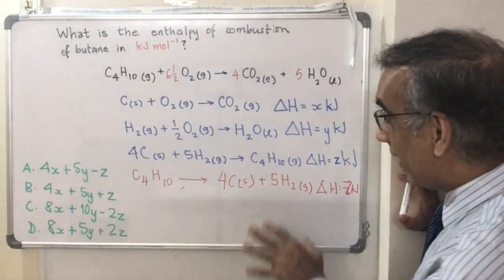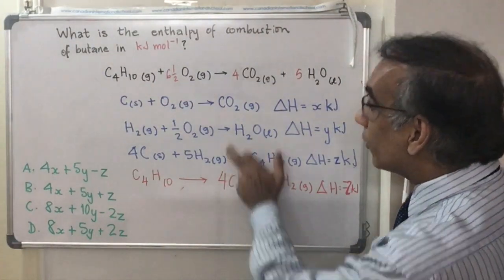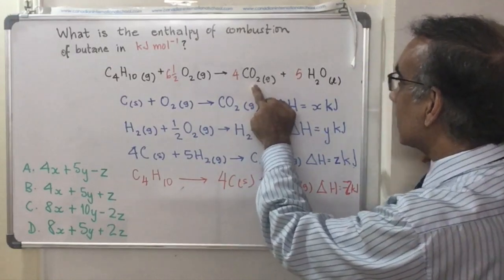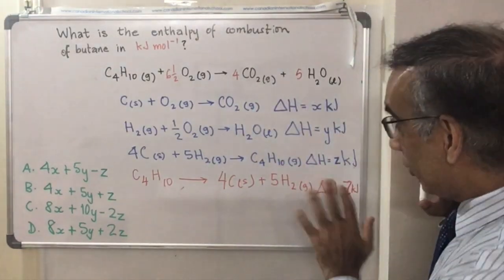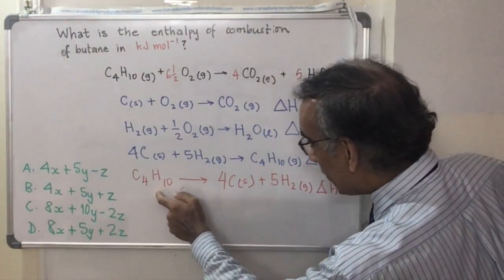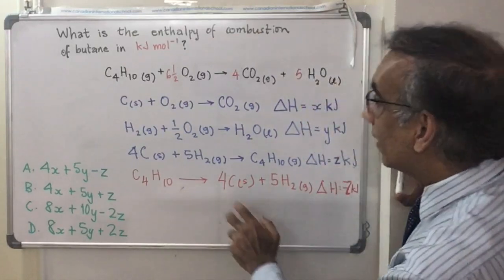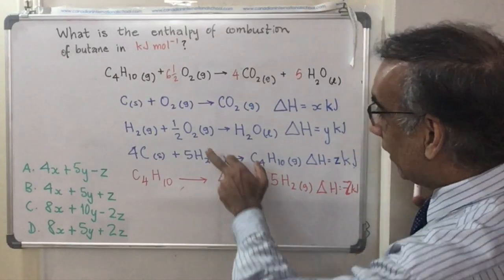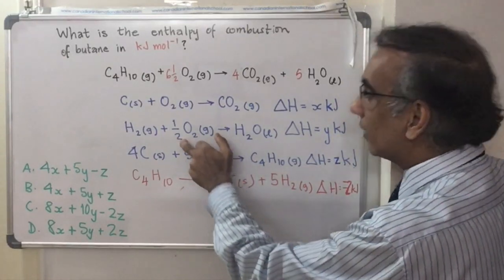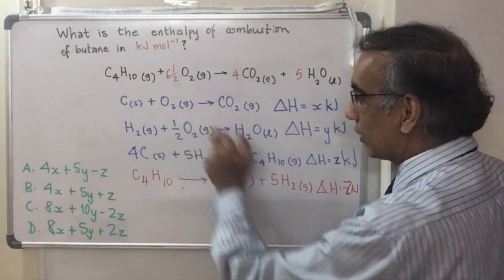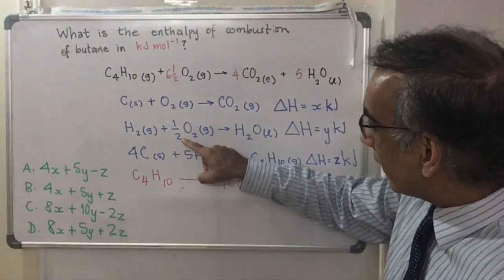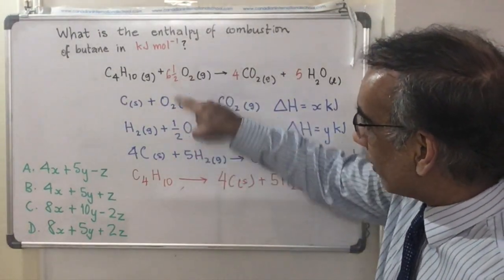So once we have that, then we need to look at the other equations now and seek out where we'll find the oxygen, the carbon dioxide and the water. So we've got the butane where we need to have it. The next thing that we need is oxygen. And here you've got half of an oxygen and here you've got one oxygen. So we need to do some multiplying then so that we'll eventually end up with six and a half oxygens.